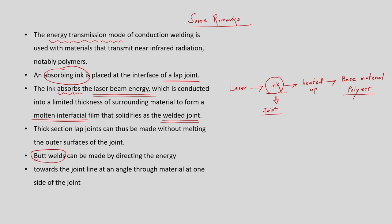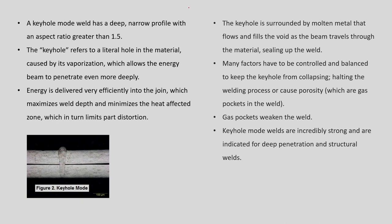For butt welds, these conduction mode processes can be applied by directing the laser beam energy either at the top surface or at the rear surface of the butt joint. The next important mode of laser welding is keyhole-based laser welding.